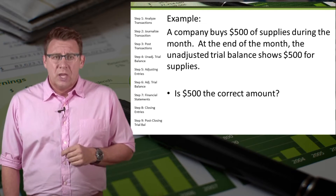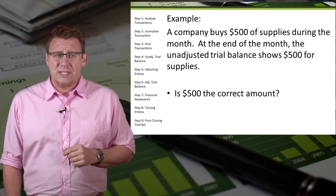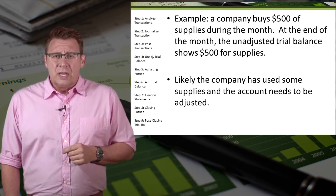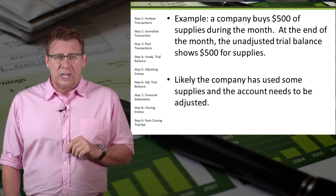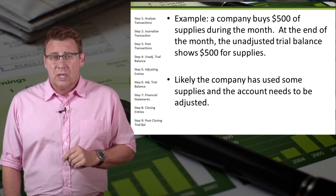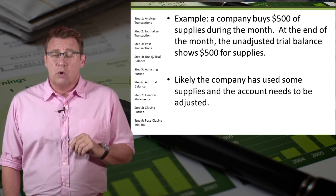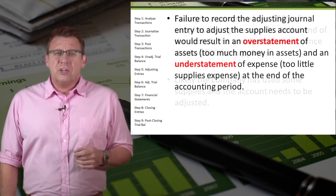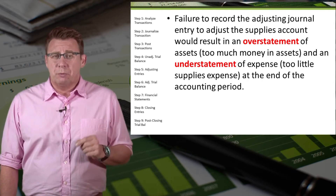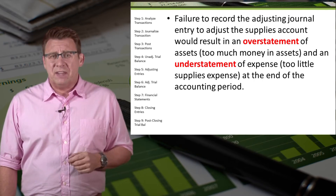Let's look at an example. A company buys $500 of supplies during the month. At the end of the month, the unadjusted trial balance shows $500 for supplies. Is $500 the correct amount? Isn't it likely that the company has used some of the supplies? No one wants to make a journal entry each time someone takes a pen or staples some papers together — that would be horribly inefficient. Yet pens were used, papers were stapled, and all of that needs to be accounted for. This is why accountants record adjusting entries at the end of the accounting period.